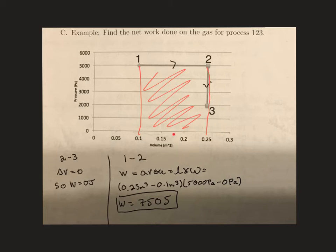So I'm taking my length here to be the change in volume, and then I'm taking my width here to be the pressure. So we go from 5,000 down to 0 here.